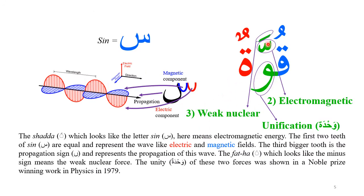The Shadda on the Waw represents the electromagnetic force. If you notice carefully, the Shadda looks like the first two teeth of the letter Sin. Sin has three teeth — the first tooth represents the electric component, the second represents the magnetic component, and the third is the propagation sign indicating the propagation of the electromagnetic wave. You can see that the electromagnetic wave has an electric component and a magnetic component at 90 degrees, propagating together. So the Shadda gets the same meaning as Sin — the electromagnetic wave.